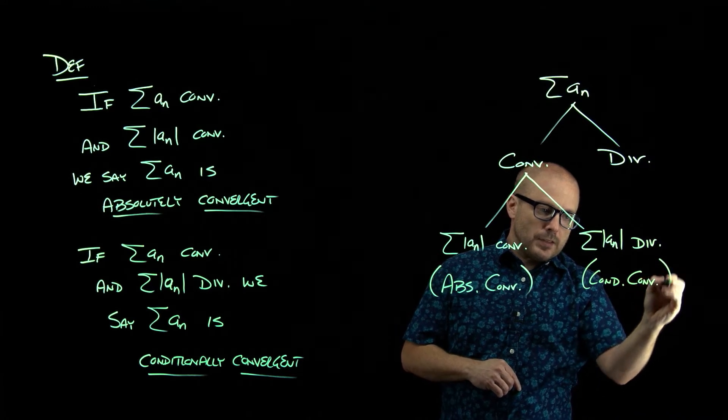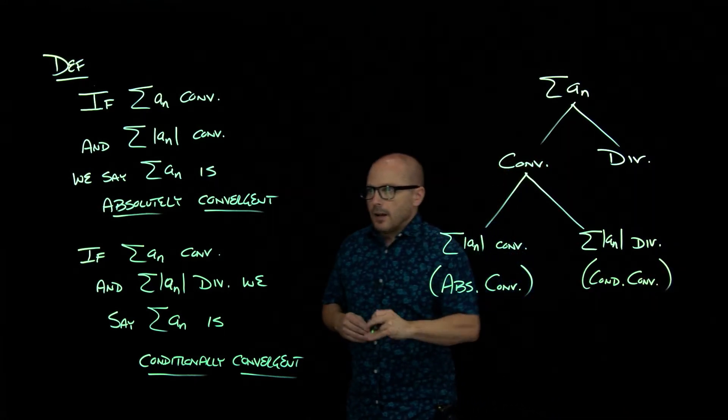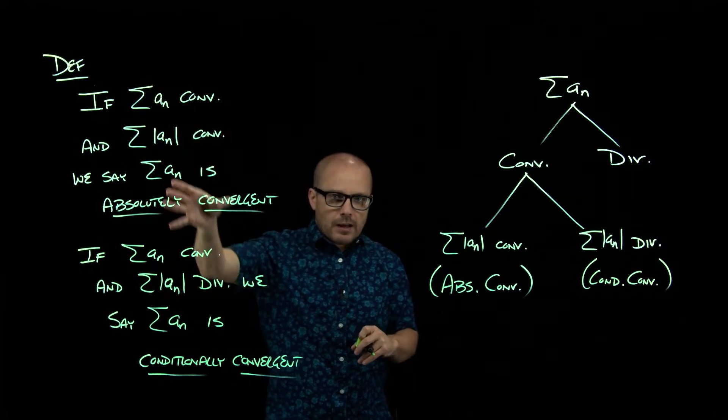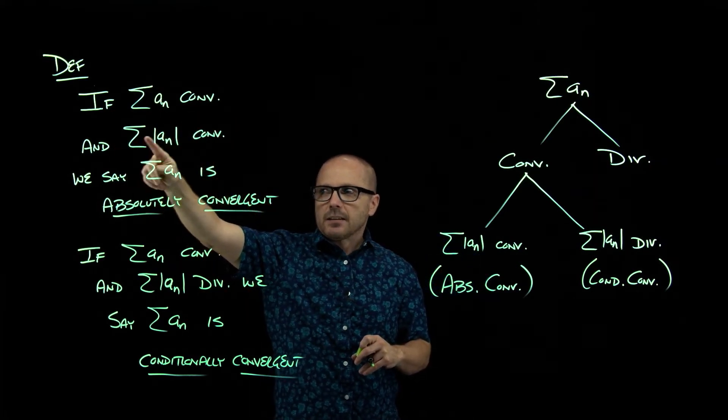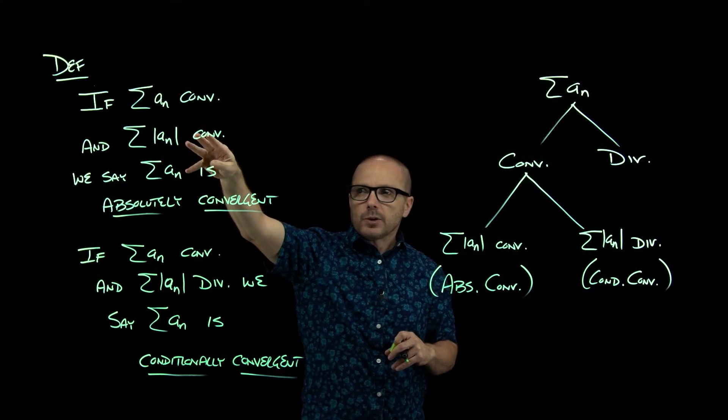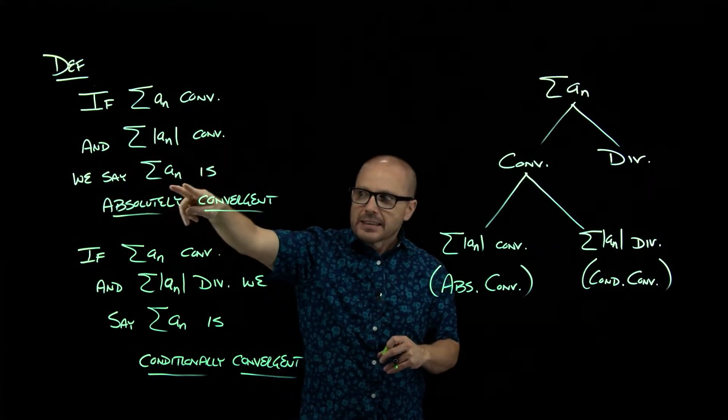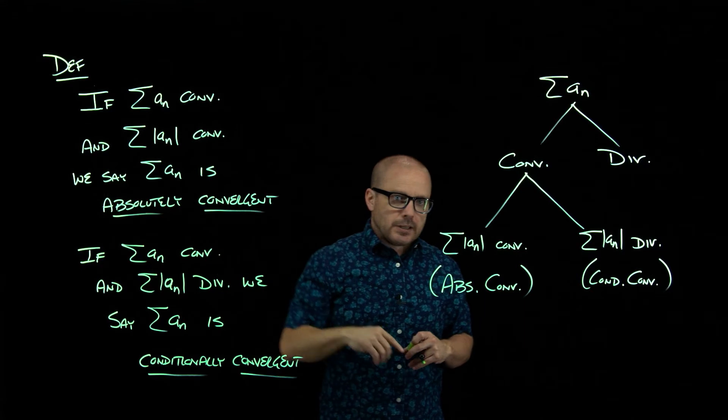So we've got these two subcategories. Here it is kind of written out fully. So if a series converges and the series of its absolute value of terms converges, then we say that that series is absolutely convergent.